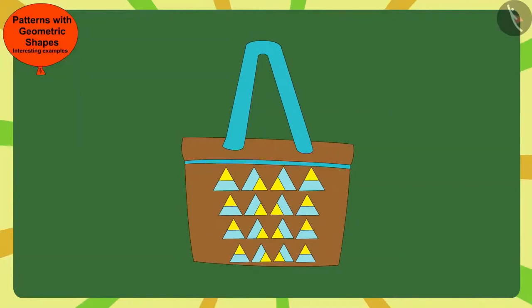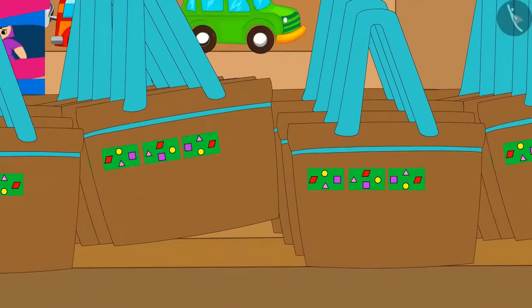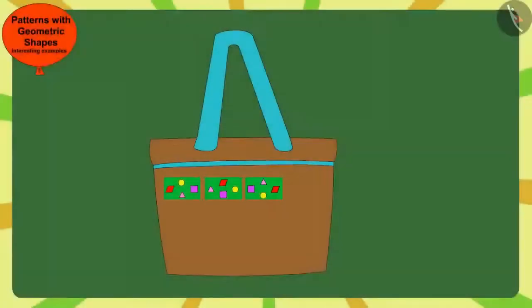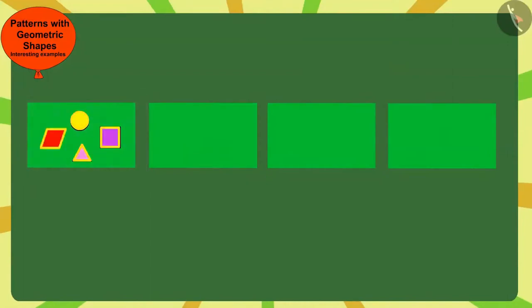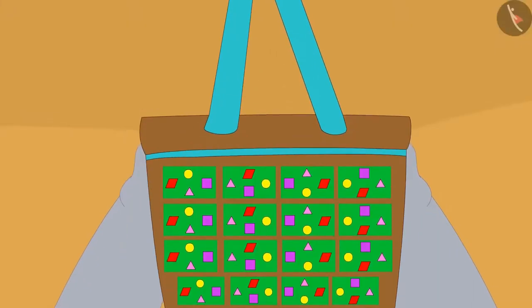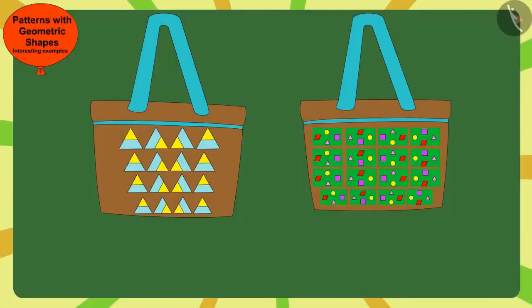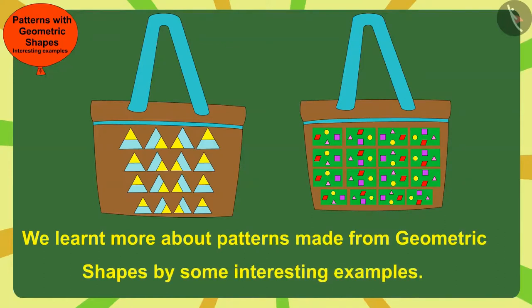Like you, Bunny also found the rule of this pattern and completed the pattern on the bag. The next day, when Bunny went to Gagu's shop, he noticed that Gagu is now selling bags of a new pattern. Children, can you find the rule of this pattern and complete it? Stop the video and find a solution. Here, each time Gagu made this pattern by rotating this rectangle a quarter in the clockwise direction. When Gagu saw the bag completed by Bunny, he liked it very much. Then both Gagu and Bunny started making more beautiful bags together. Children, in this video we learned more about patterns made from geometric shapes. In the next video, we will see some common mistakes related to this.